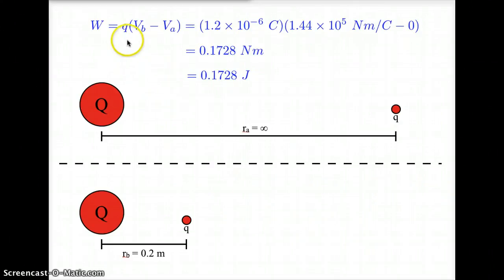Going back to our equation, work equals the charge we're moving, q, times the ending minus the starting electric potential values. Plugging in q, 1.2×10^-6 coulombs, times V_b minus V_a, I get a work value of 0.1728 newton meters. Or if you prefer, a newton meter is the same thing as a joule, so we could also say the answer is 0.1728 joules.